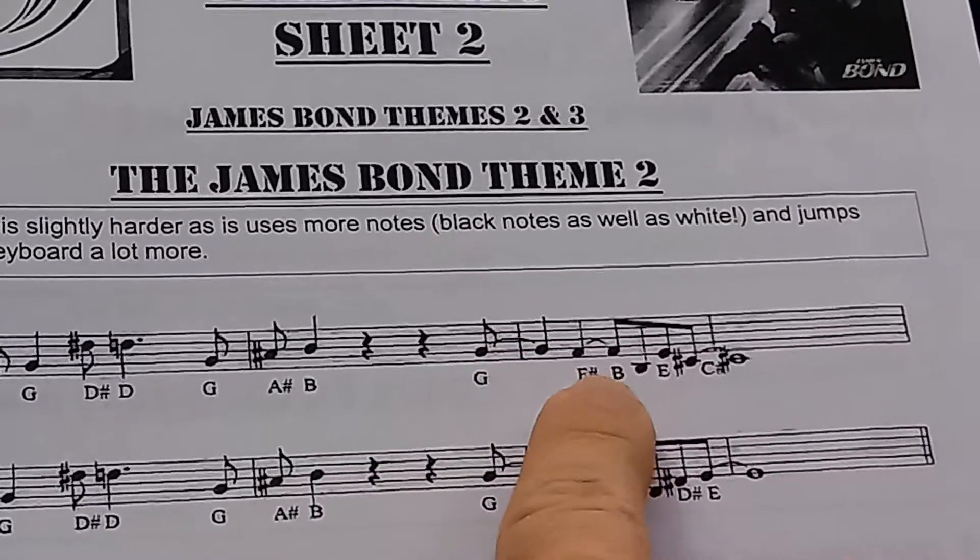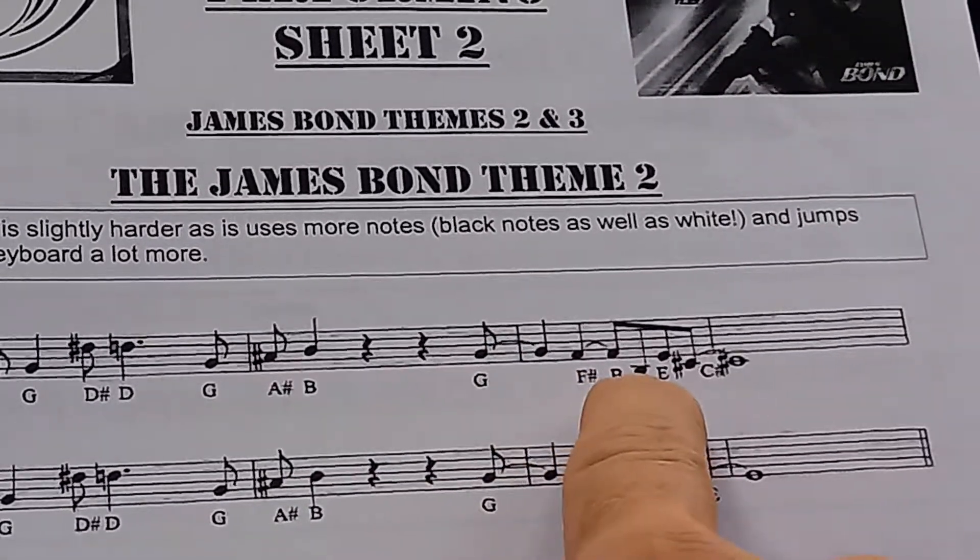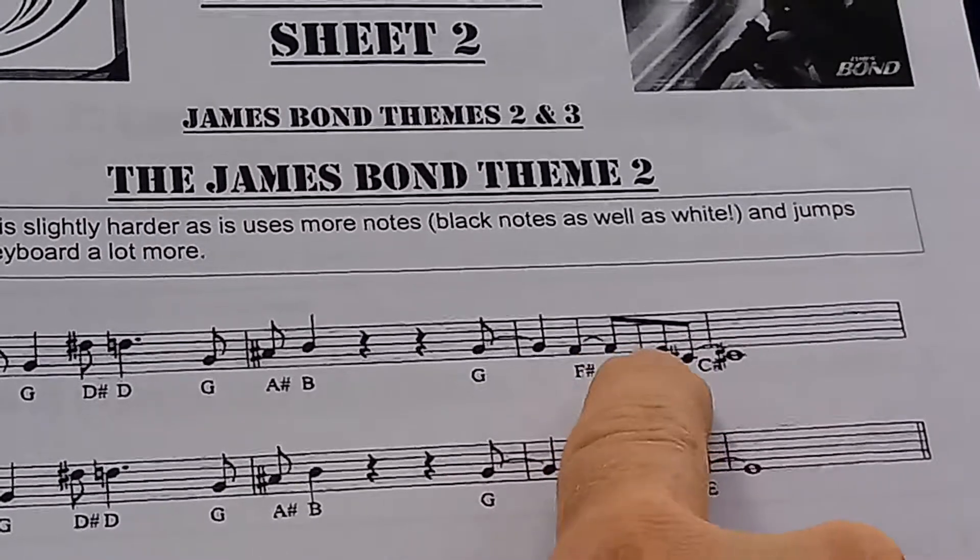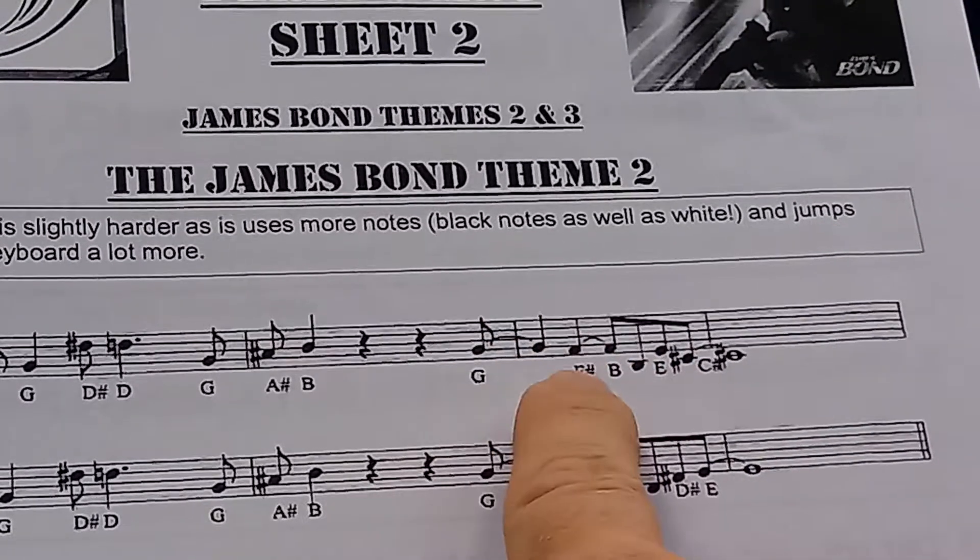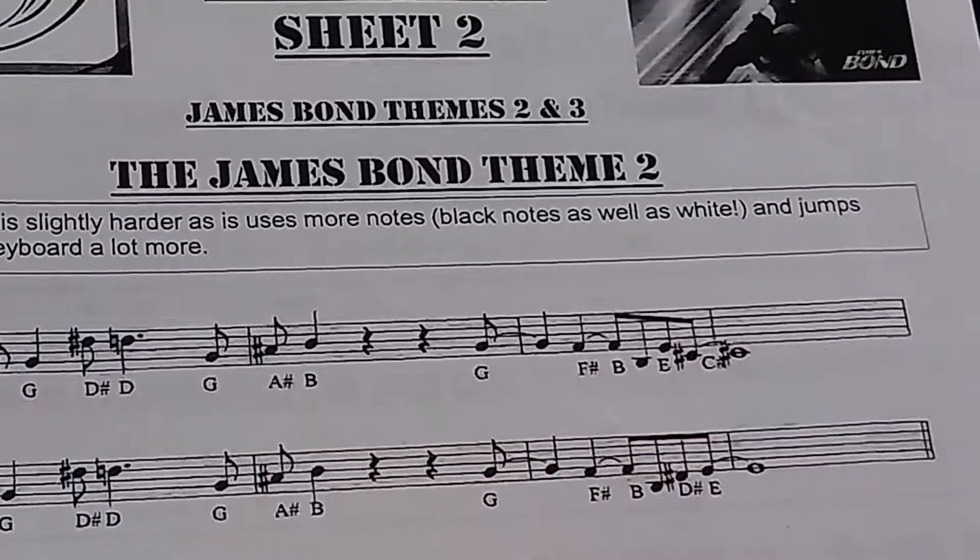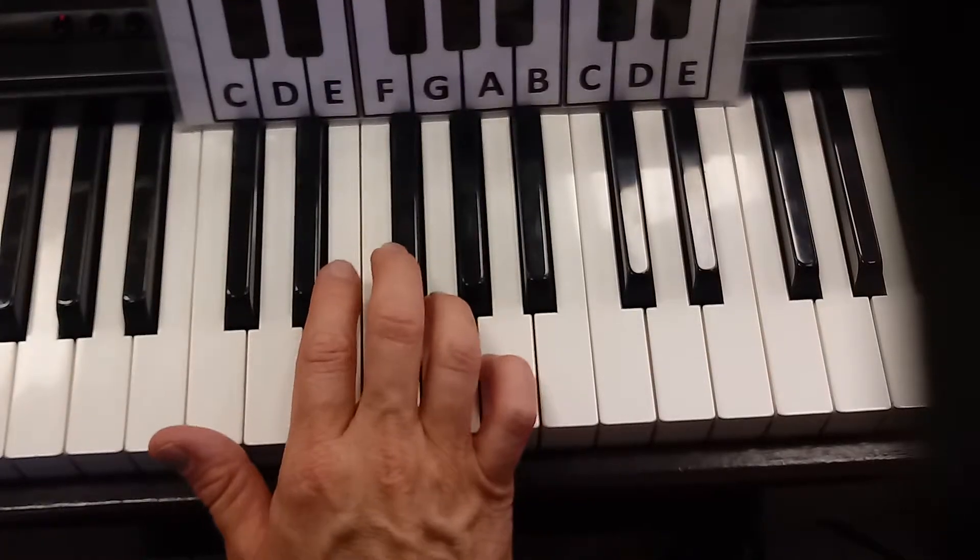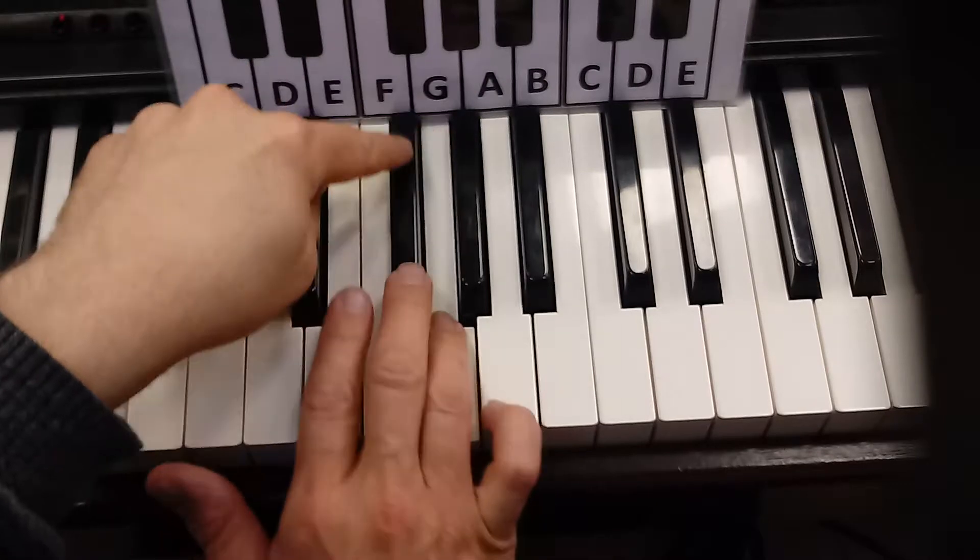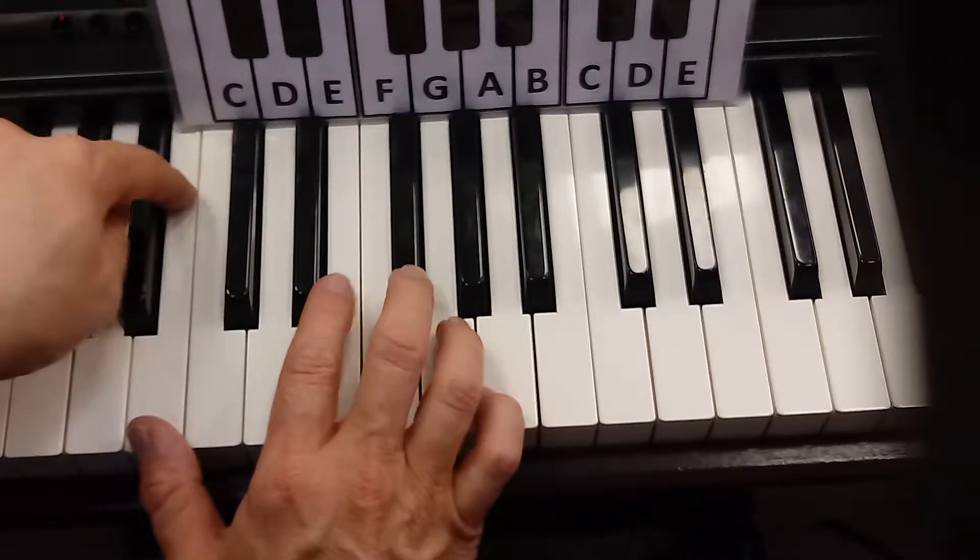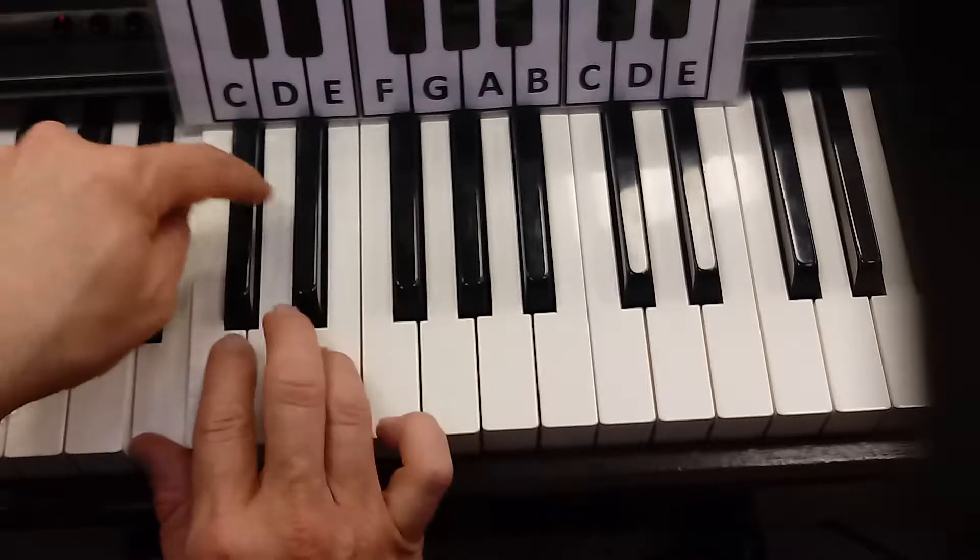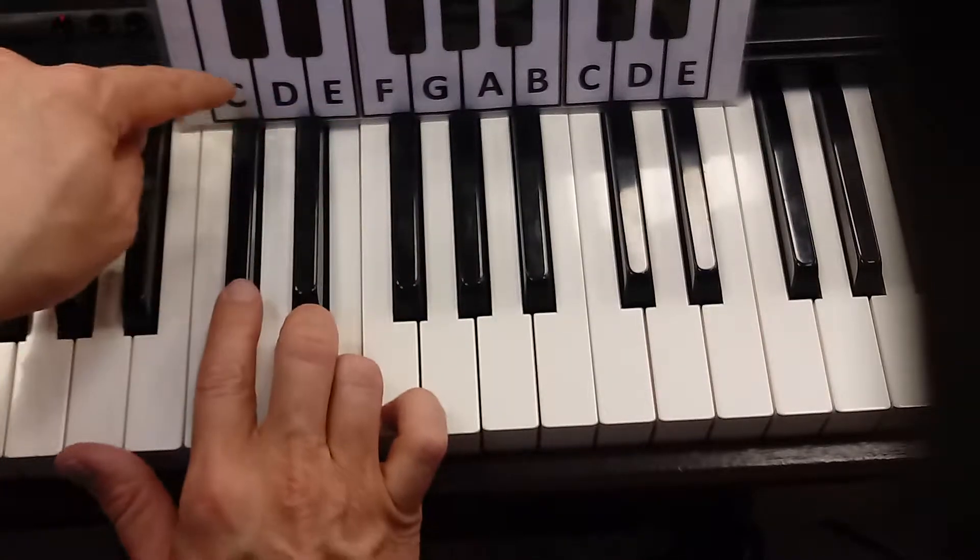G, F sharp. B is the low note, not that one. E, C sharp. So again, G, F sharp, B, E, C sharp, like this. G, F sharp, and then it's the low B. It's the one below C. B, E, C sharp.